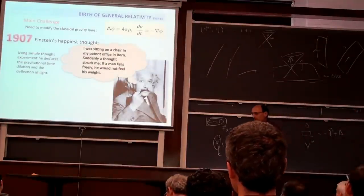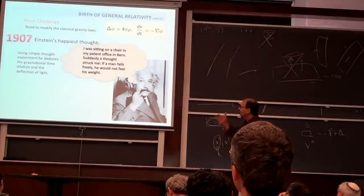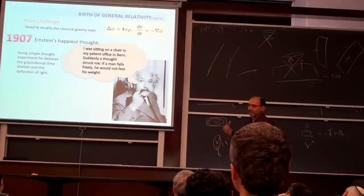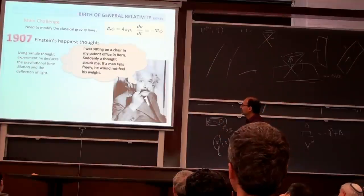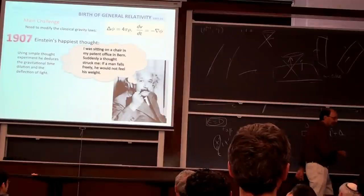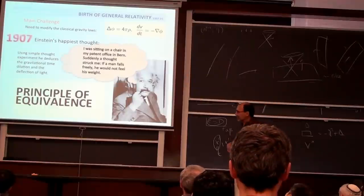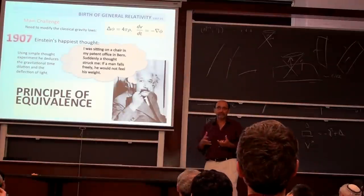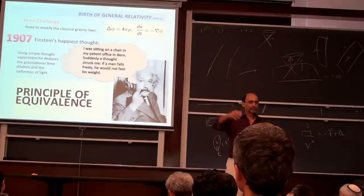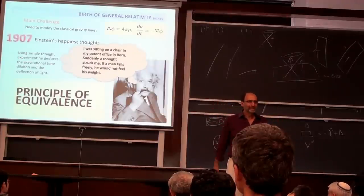Based on this, he realizes that somehow gravity and inertia are connected. Using a sequence of thought experiments, including the deflection of light, he develops the idea. The equivalence principle in the sense of Newton was just Galileo's observation that all objects dropped from the tower fall the same way — there is no difference between different materials.